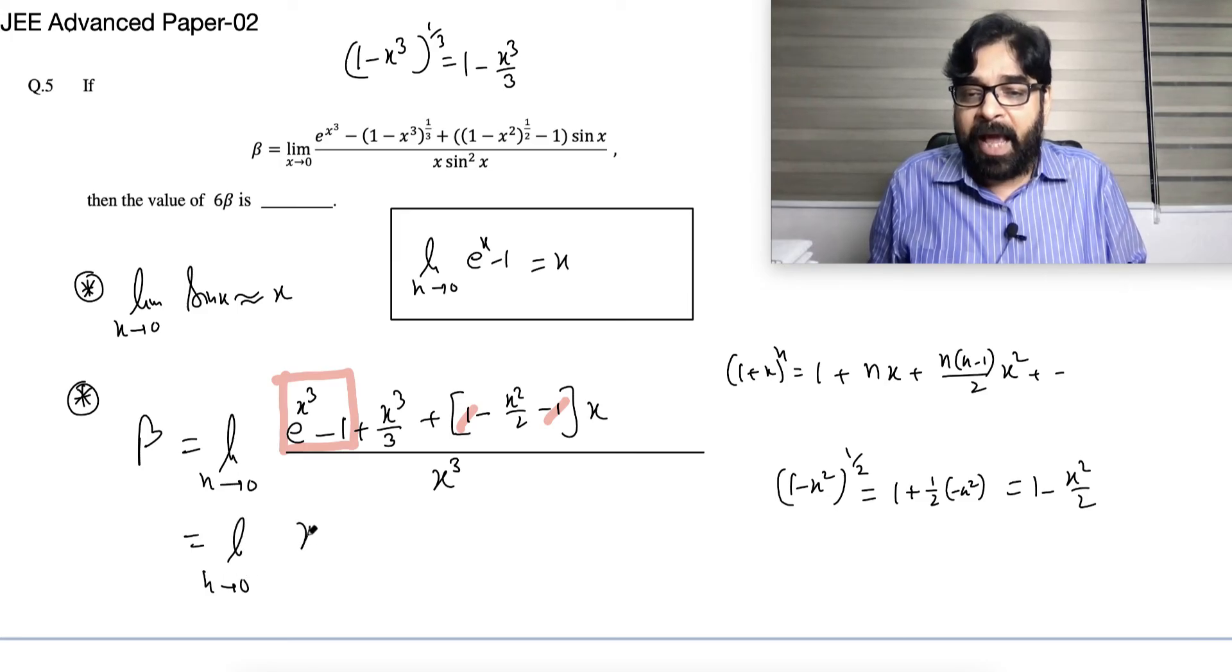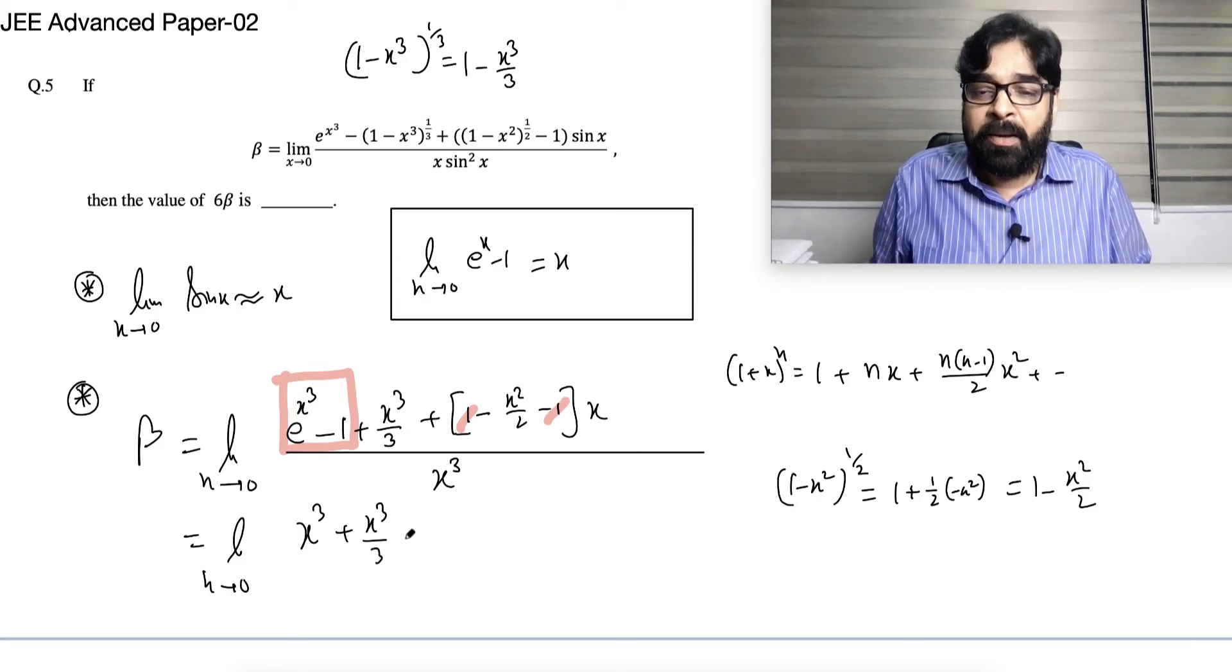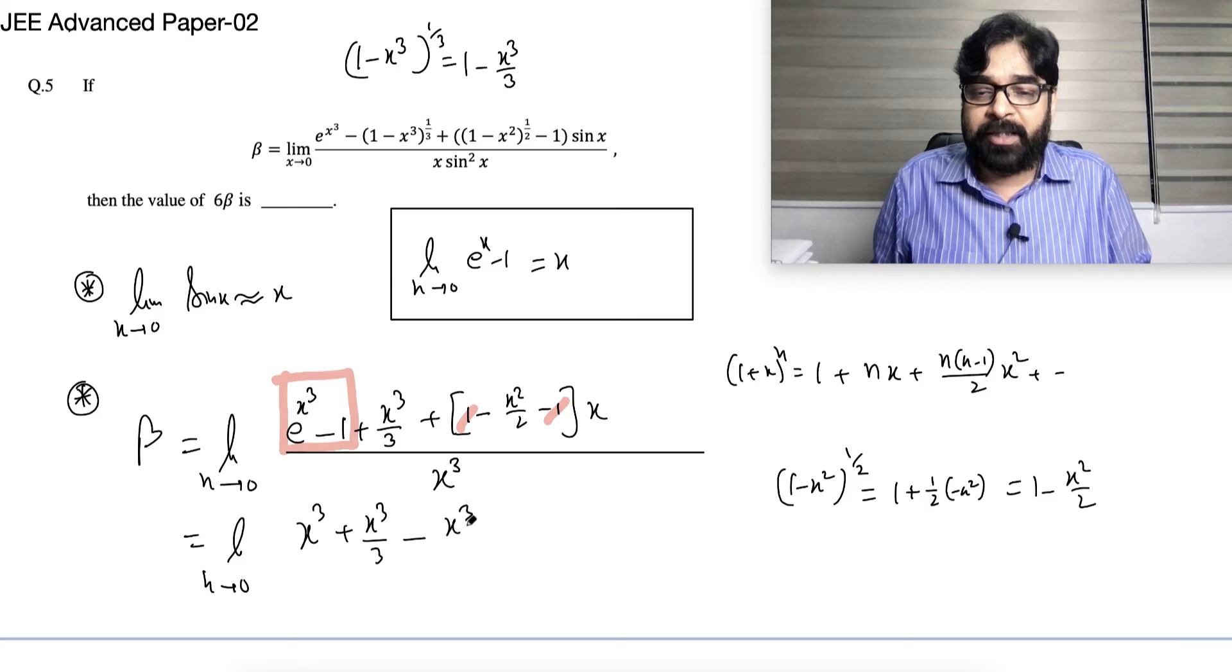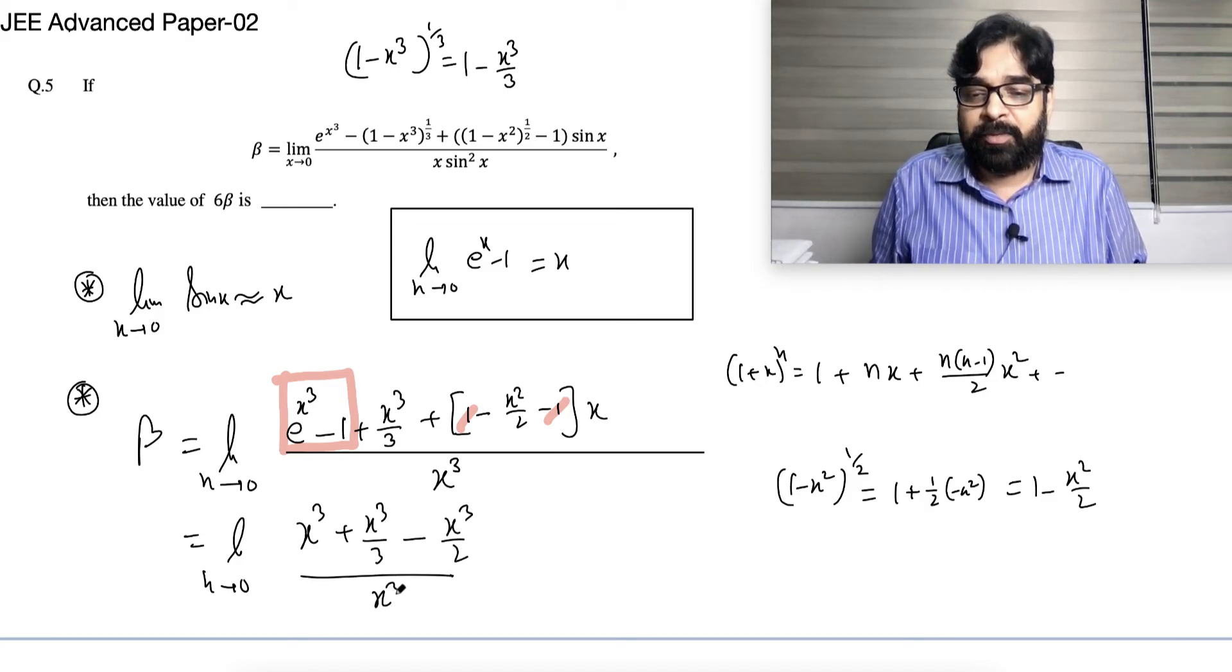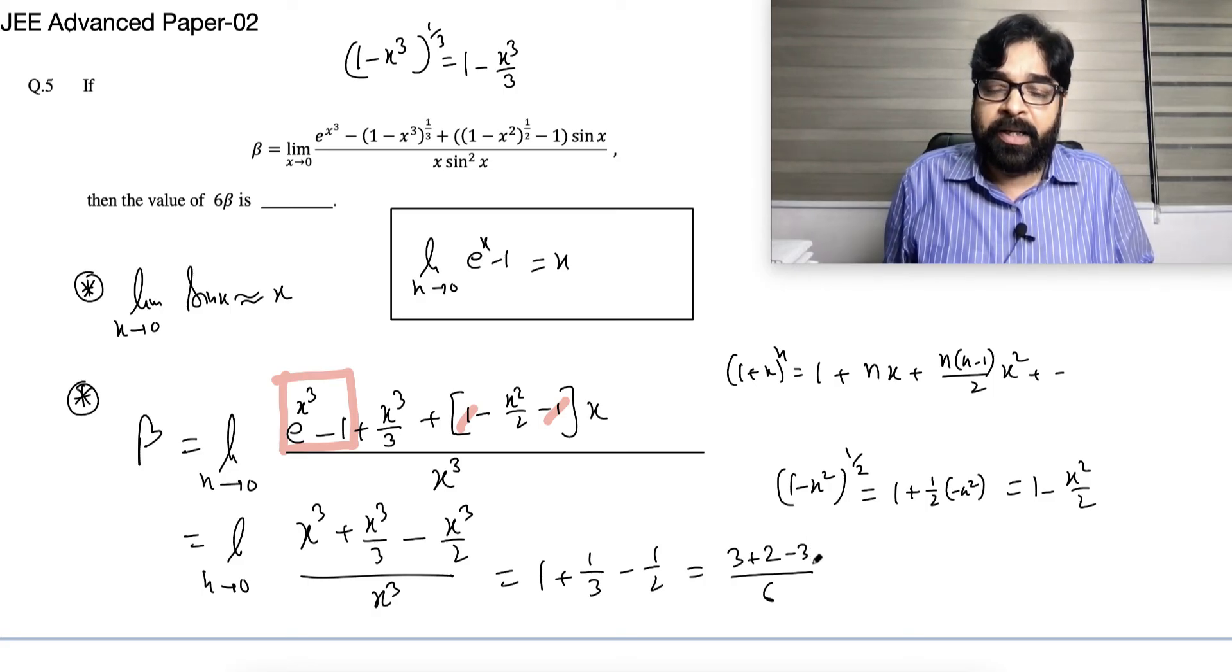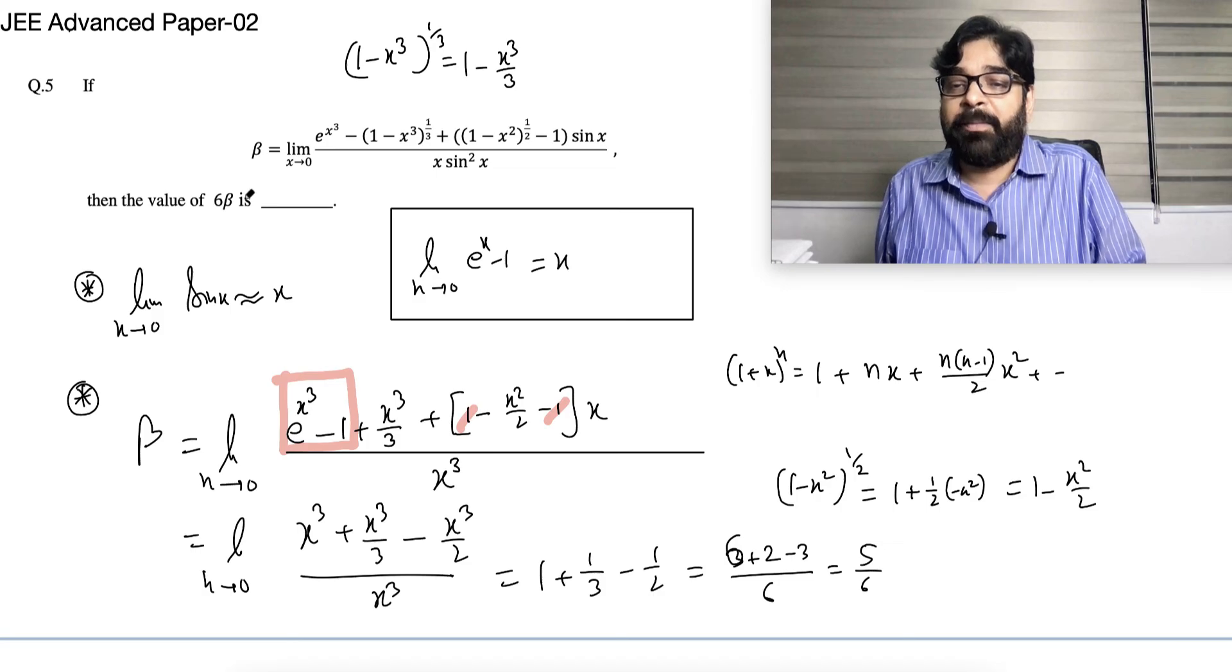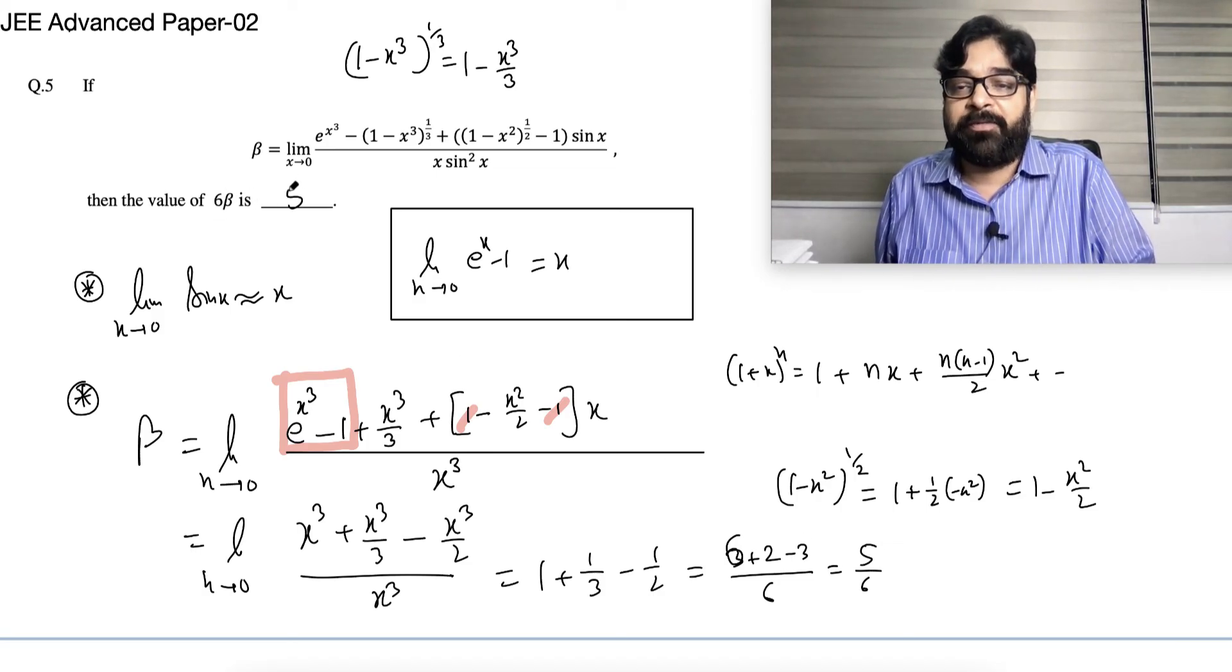So this will become limit x approaches to 0, x³ + x³/3. Look here, one already got cancelled, minus x²/2 by x³. See how simple. It's over. x³ common and cancel. So your answer final, 1 + 1/3 - 1/2, so LCM, if you are taking 6 as LCM, this will become, something wrong I did. So this will become 6, sorry, yes, so this will become 5/6. Correct? So 6β equal to 5/6, β equal to 5/6, so 6β will be 6 into 5/6 means 5. Answer.